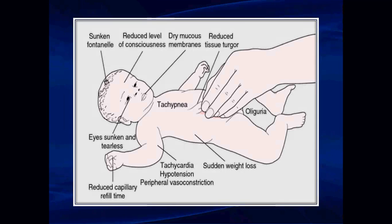On physical examination, signs of dehydration include: sunken anterior fontanel in young infants; decreased level of consciousness or lethargy; sunken eyes; crying without tears; dry mucous membranes; tachypnea with increased depth — rapid deep breathing called acidotic breathing in severe dehydration; and reduced or prolonged skin turgor due to decreased tissue perfusion.